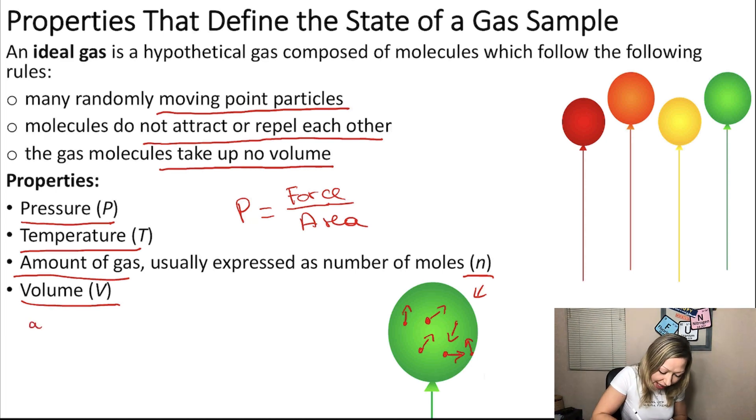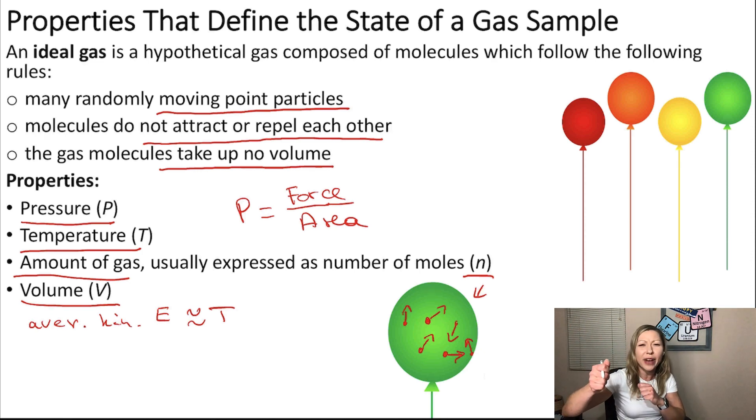And the average kinetic energy is basically equal to the temperature. We can define it in many different ways. That's why I use the squiggly line. But in short, if the temperature is high, your molecules will move really, really fast. If the temperature is low, the molecules will move really, really slow. Now, my question is, if the particles move fast, what happens to the pressure? Will the pressure be high, or will the pressure be low?